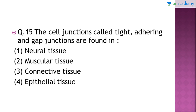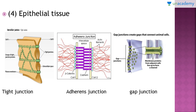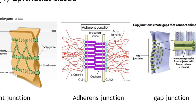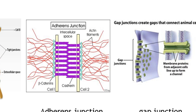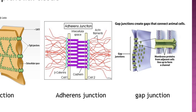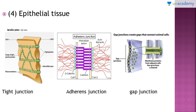Question number 15: 'Cell junctions called tight, adherens, and gap junctions are found in which of the following tissue?' The right answer is option number 4 — these junctions are found in epithelial tissue. In tight junctions, the cell membranes are bound tightly and no exchange of material takes place. In adherens junctions, a few substances can pass through, whereas in gap junctions, substance transportation is free and any substance can pass from one cell to the next.